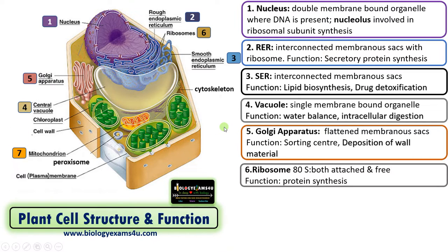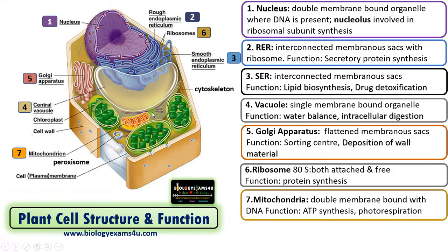The next organelle is the mitochondrion. It is a double membrane-bound organelle with DNA, and therefore it is called a semi-autonomous organelle. Its function is ATP synthesis, producing energy for all activities of the cell. It is also involved in photorespiration in plants.